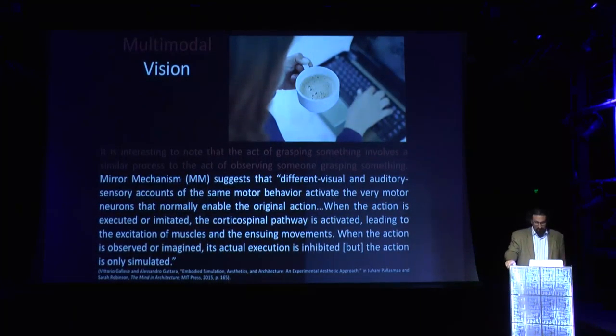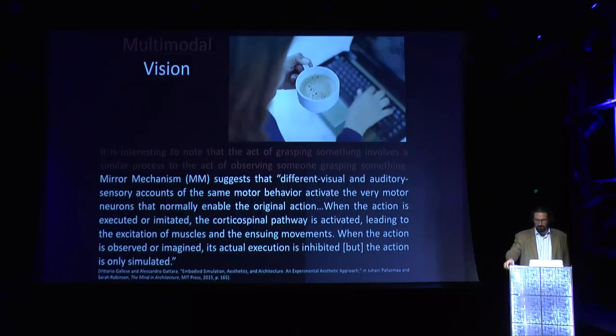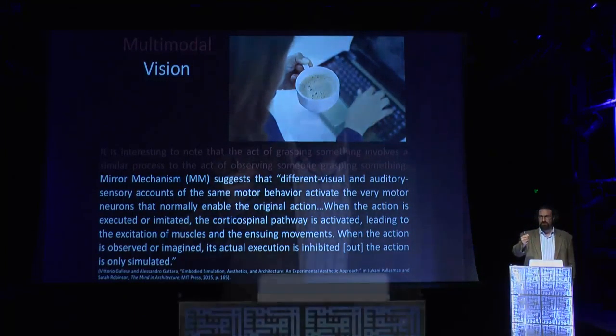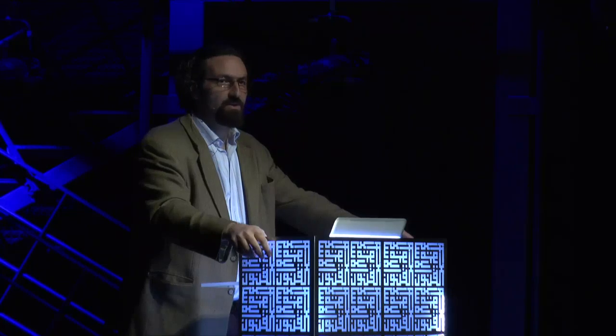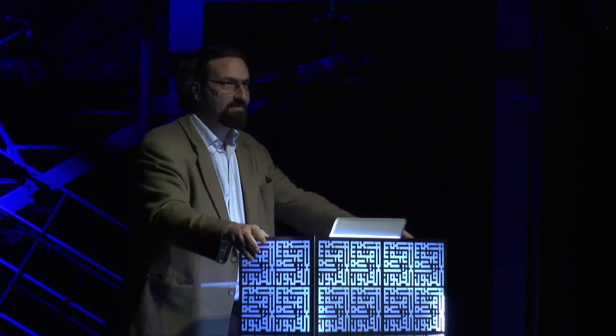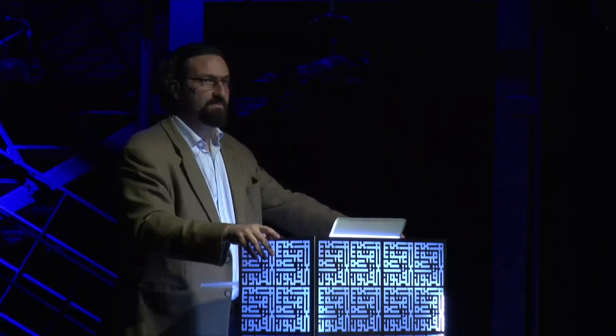The act of grasping something involves a similar process to the act of observing someone grasping something. If I hold up a cup, the same motor part of my brain that is activated when I hold it is also activated in your brain in order for you to understand that I'm holding it. So when you sit there perceiving my actions, your brain is activating the same parts of the brain to understand the act. Perception is very active below the level of consciousness — your brain is doing a lot more than you assume.